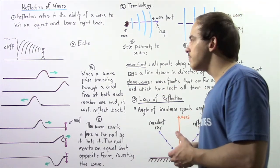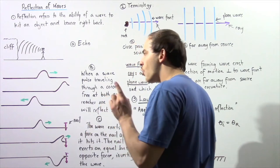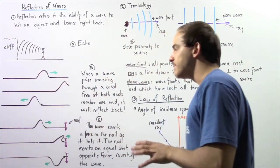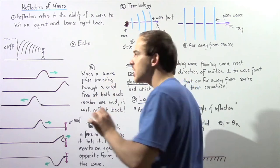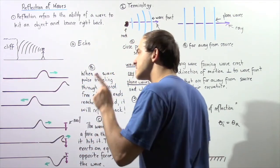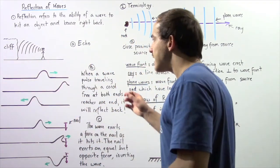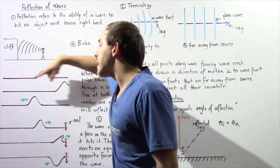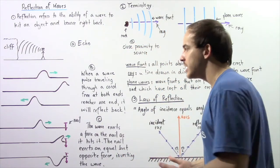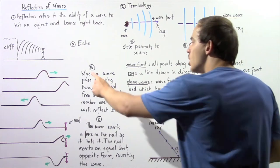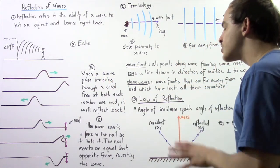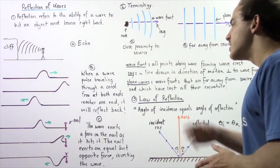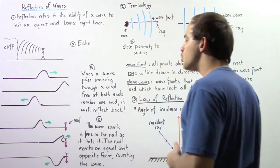Let's examine another example of reflection. Suppose we have a thin cord that is not tied at either end — both ends are free. If we create a single wave pulse on the left side of the cord, that pulse travels towards the right. Eventually, the wave pulse reaches the end and bounces back, reflecting and traveling in the opposite direction of its initial direction. When a wave pulse traveling through a cord free at both ends reaches one end, it will bounce back and travel in the opposite direction.